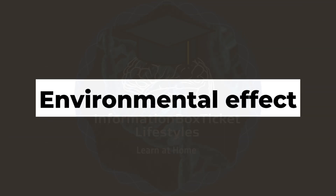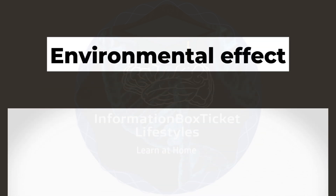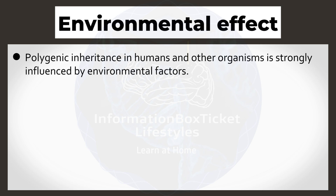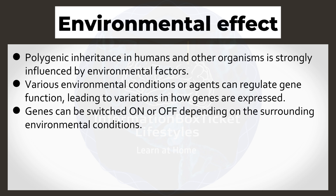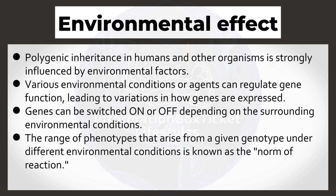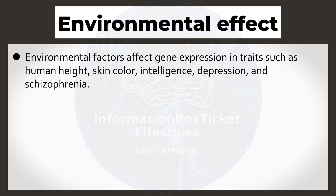Environmental effect on polygenic inheritance: Polygenic inheritance in humans and other organisms is strongly influenced by environmental factors. Various environmental conditions or agents can regulate gene function, leading to variations in how genes are expressed. Genes can be switched on or off depending on the surrounding environmental conditions. The range of phenotypes that arise from a given genotype under different environmental conditions is known as the norm of reaction. Environmental factors affect gene expression in traits such as human height, skin color, intelligence, depression, and schizophrenia.